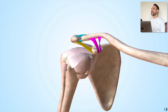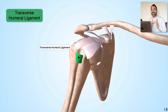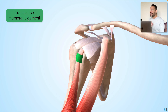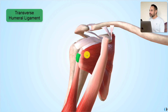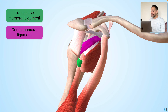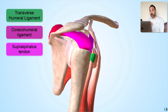Finally, we have the transverse humeral ligament, which is a really important ligament to be aware of anatomically, as it is suggested to hold the long head of biceps tendon within the bicipital groove of the humerus. Interestingly, it's suggested in some sources that this ligament may not actually exist and may just be an extension of the subscapular tendon. It's also suggested that other ligaments such as the coracohumeral ligament and the supraspinatus tendon may also play a role in holding that long head of biceps tendon in position.